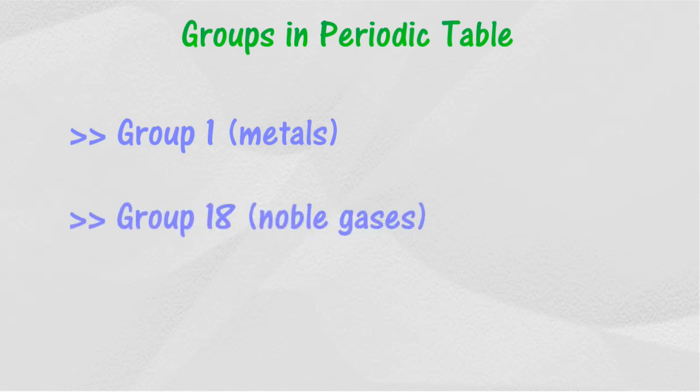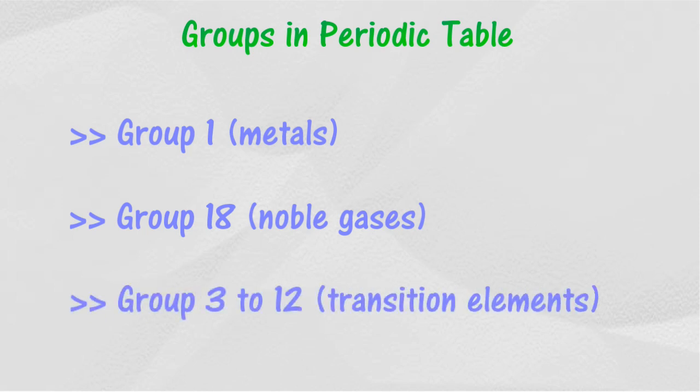Group 1 is made up of metals which are very reactive. Group 18 is made up of noble gases which are highly unreactive. All transition elements have metal characteristics and show physical characteristics of metal.